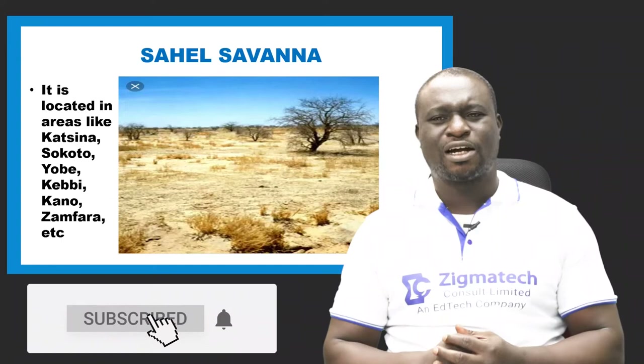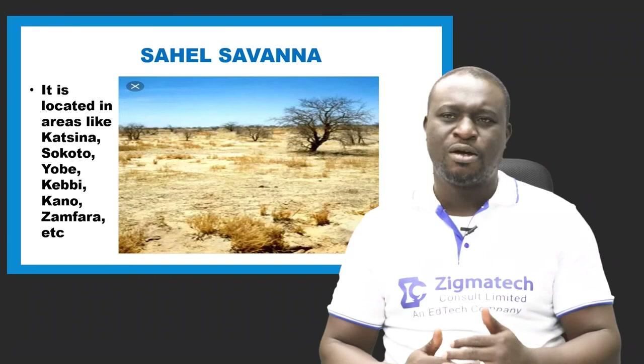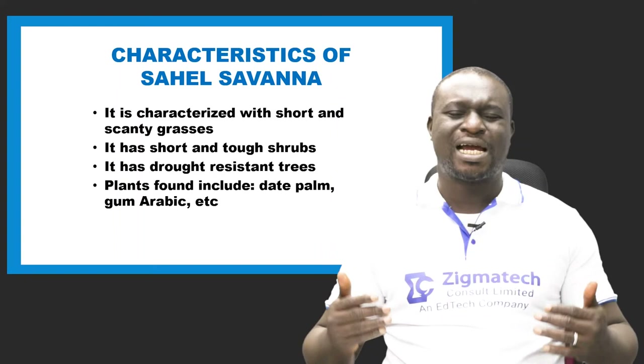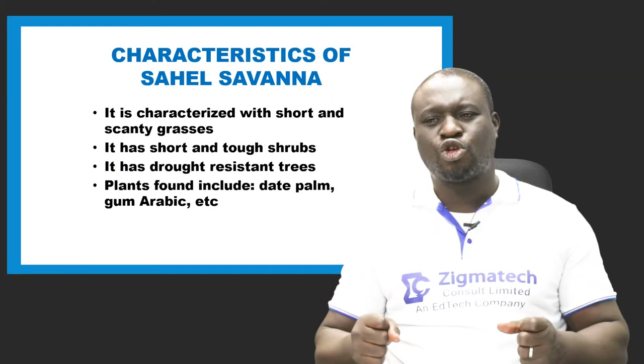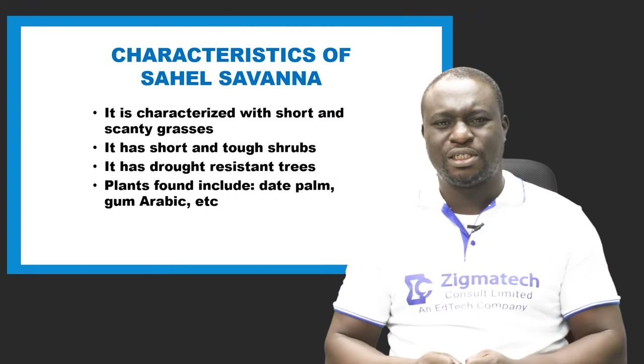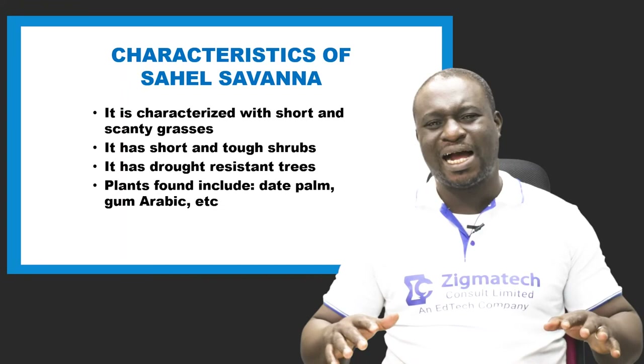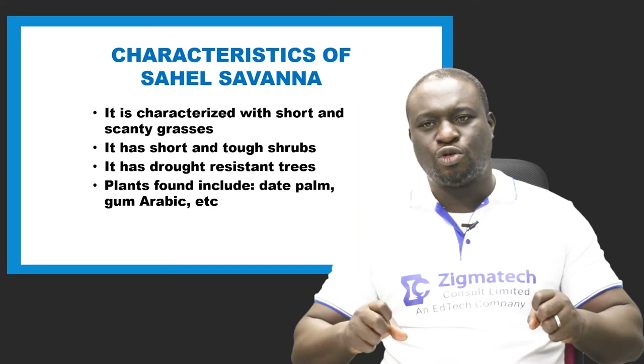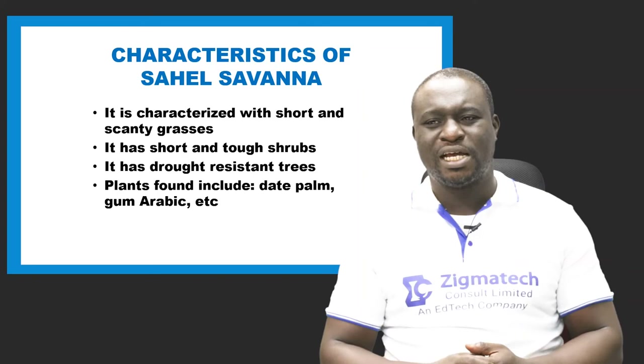The Sahel savanna is located in areas like Katsina, Sokoto, Yobe, Kebbi, Kano, and Zamfara — areas encroaching towards the desert, with desert encroachment. It is characterized by short and scanty grasses, short and tough shrubs that are drought-resistant. Plants found here include the date palm and gum arabic.